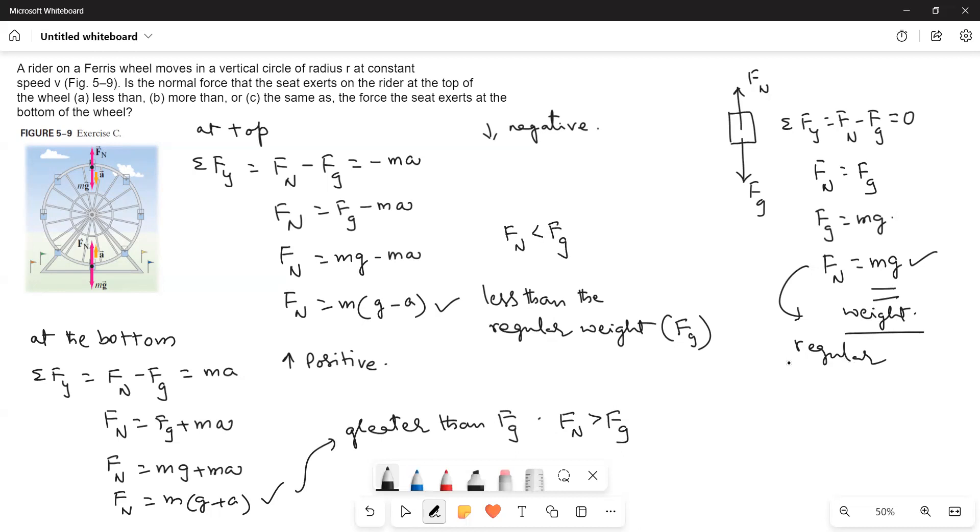And then if he is out of the Ferris wheel and standing on the ground, then it will be Fn is equal to Fg.